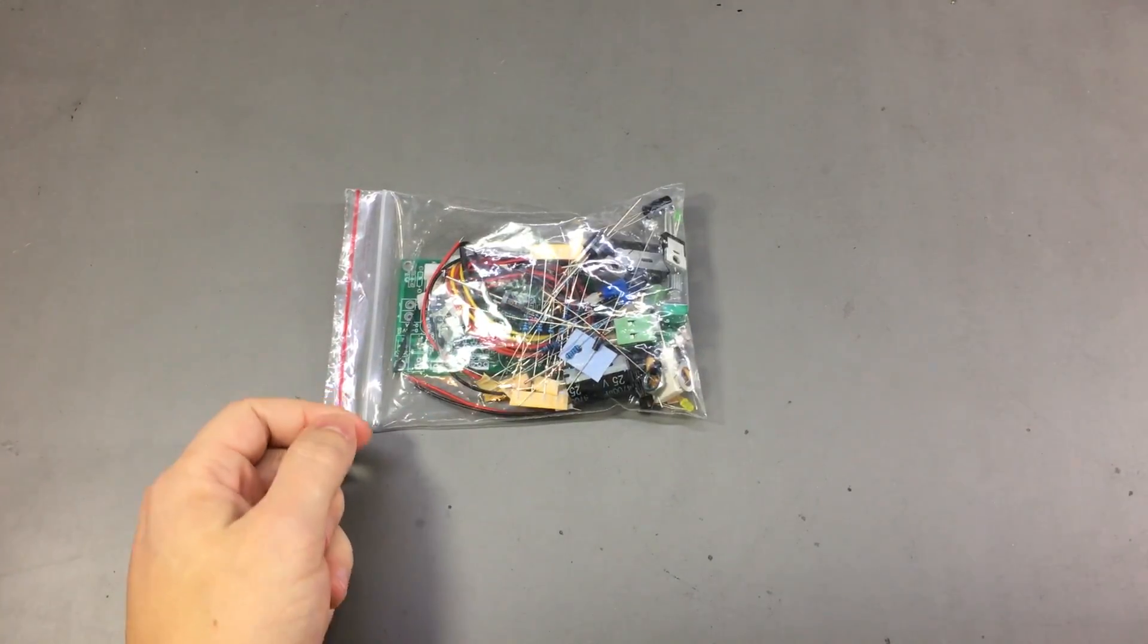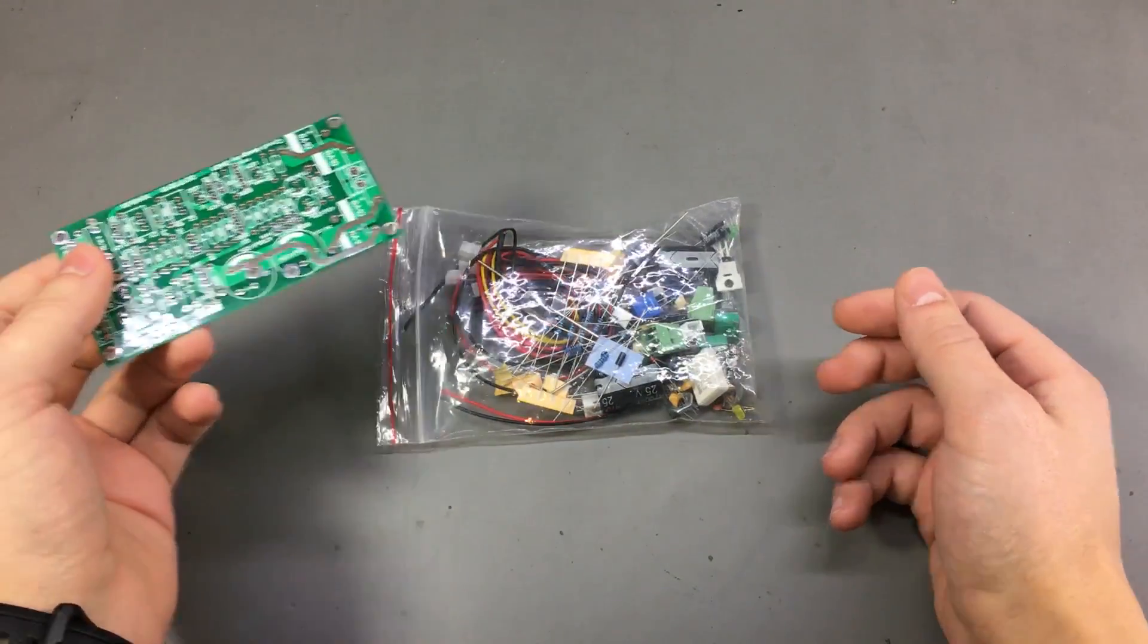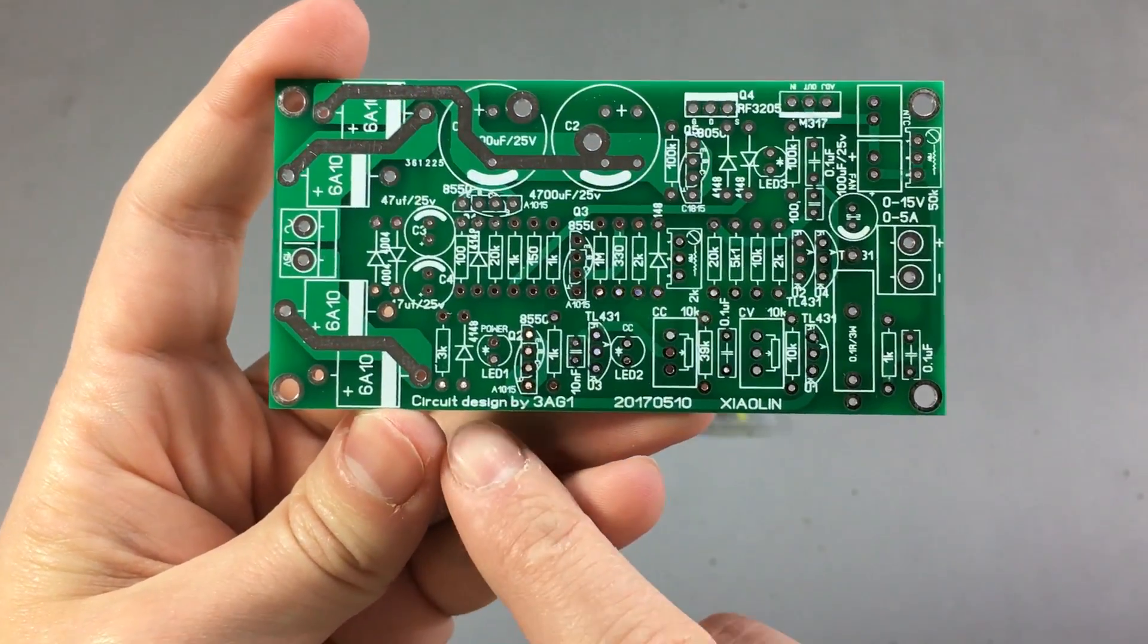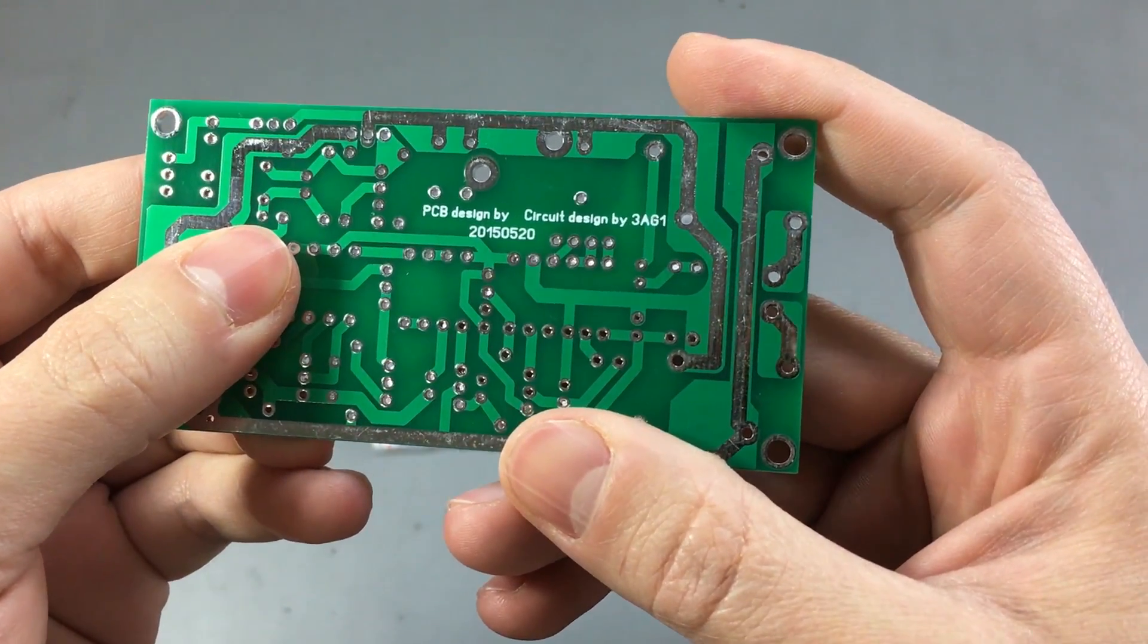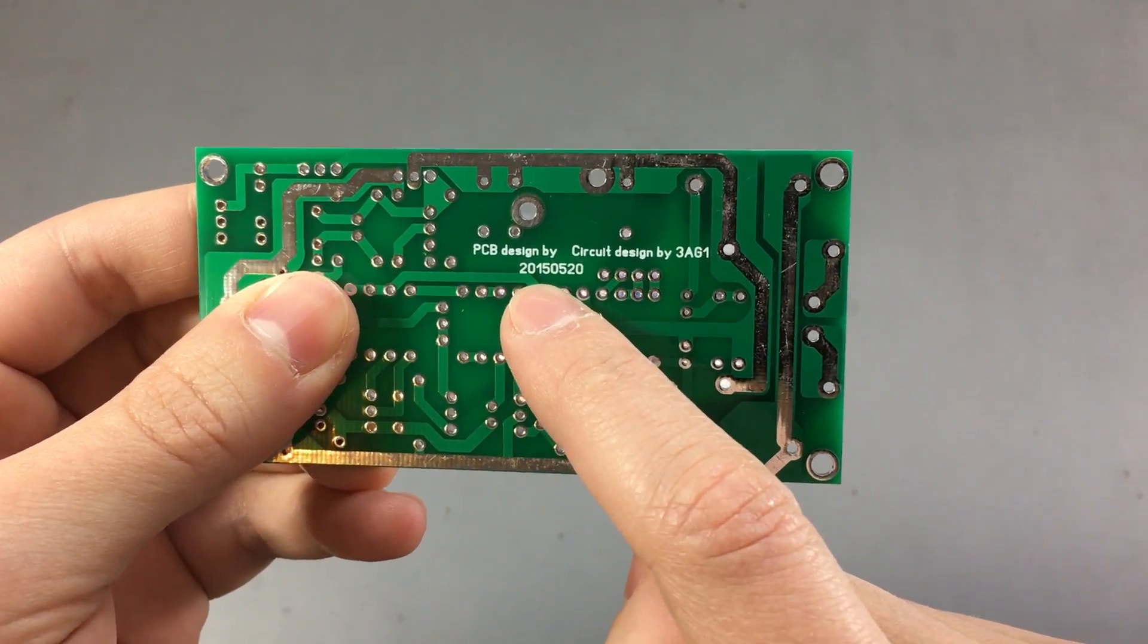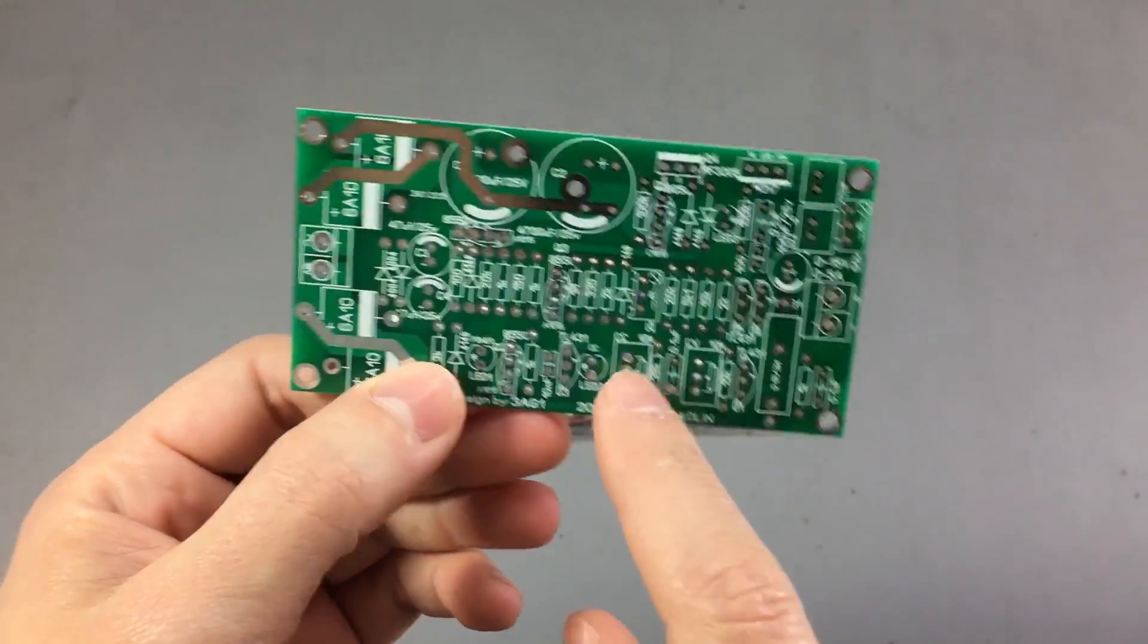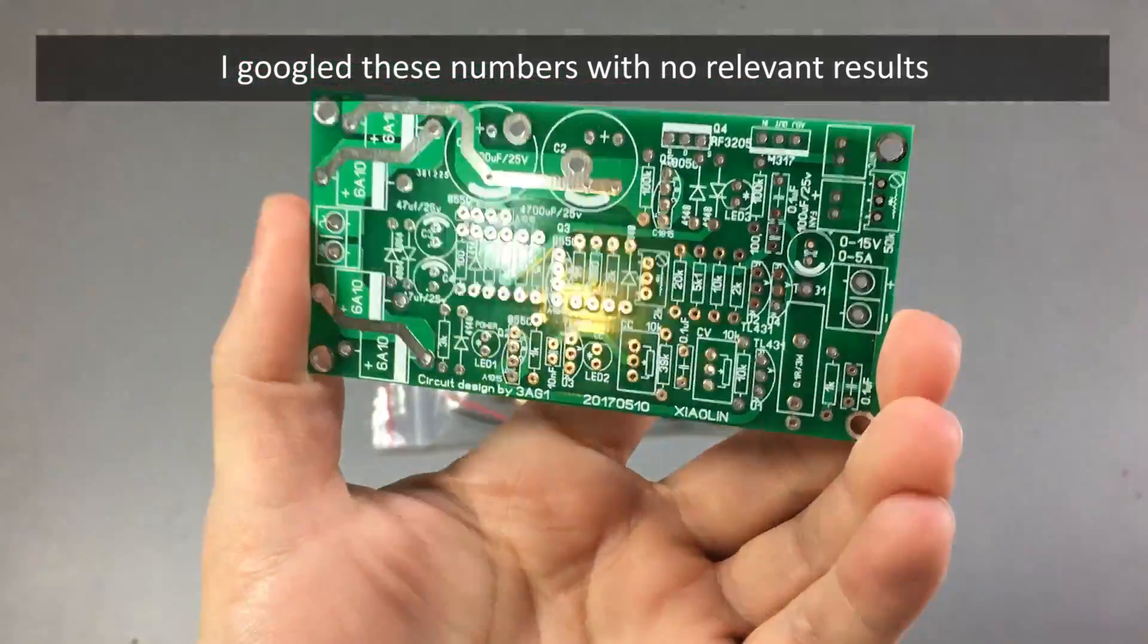My next item is a power supply kit which was recommended by one of my viewers in the comment section. The kit is advertised as LM317 power supply kit. Let's see. Do we have some silk screen? Yep. So circuit design by 3AG1. Is this like a call sign? I'm not sure. PCB design by circuit design 3AG1. So the PCB might be designed in 2015. Well, it has been manufactured by Shaolin in 2017. I need to do some Google searching on this call sign and see if I can find the original author of this power supply.